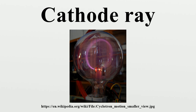Philip Lenard also contributed greatly to cathode ray theory, winning the Nobel Prize in Physics in 1905 for his research on cathode rays and their properties. The gas ionization method of producing cathode rays used in Crookes tubes was unreliable because it depended on the pressure of residual air in the tube; over time the air was absorbed by the walls and the tube stopped working. A more reliable method, investigated by Hittorf and Goldstein and rediscovered by Thomas Edison in 1880, used a cathode made of a wire filament heated red hot by a separate current, releasing electrons by thermionic emission. The first true electronic vacuum tubes, invented in 1904, used this hot cathode technique and superseded Crookes tubes, evacuated to around 10⁻⁹ atmospheres.